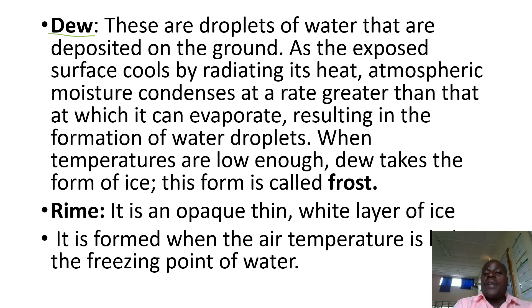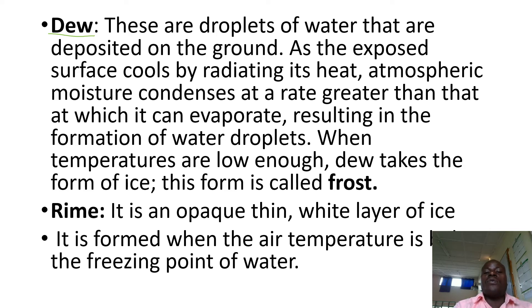We have rime. It is an opaque, thin white layer of ice. It is formed when air temperature freezes or cools below the freezing point of water. It is opaque — not transparent — and appears as a thin white layer of ice.